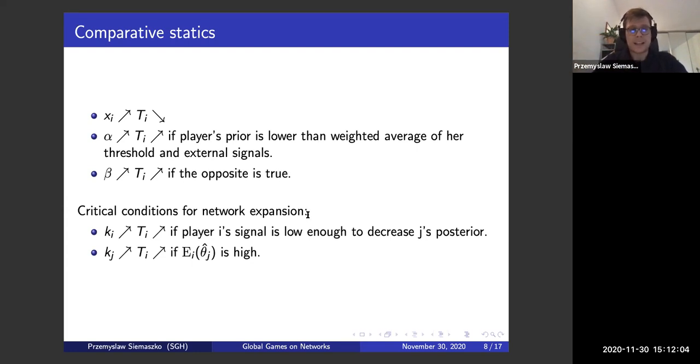What's probably more interesting are conditions for network expansions. And our threshold will increase with our own network expansion if our signal is very low. What does it mean? We will only want to extend our network if we believe we will decrease posteriors of others, and not to gain new information. And we want others to extend their network, those KJs which is the size of the network of other people, if their posterior is high. So we want others to get new information if we believe they are not willing to participate in the risky action.